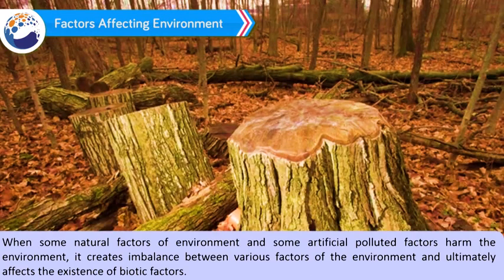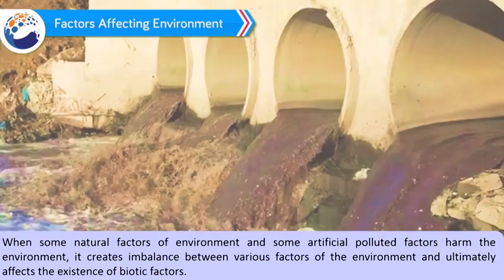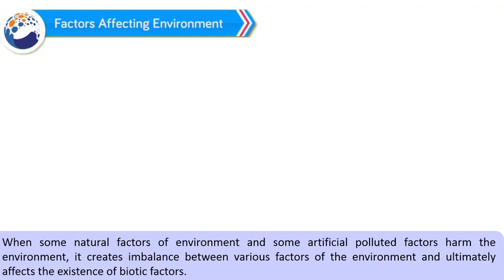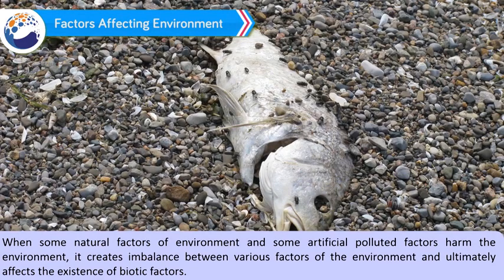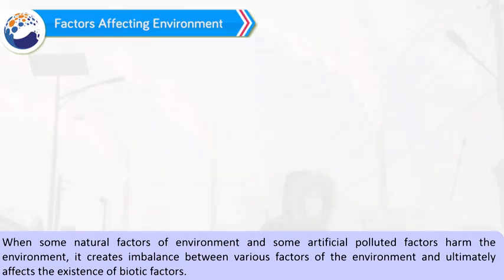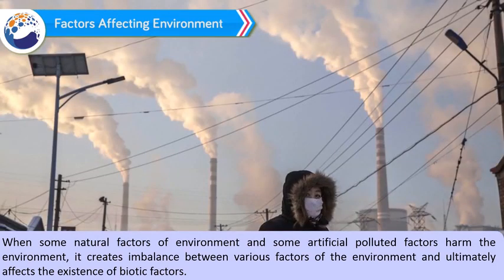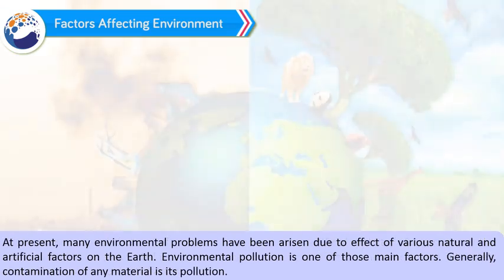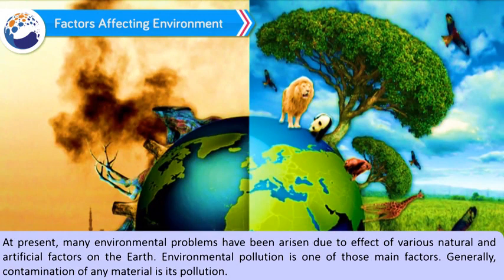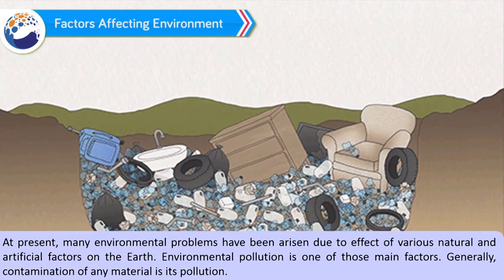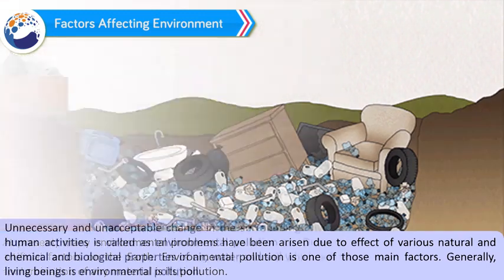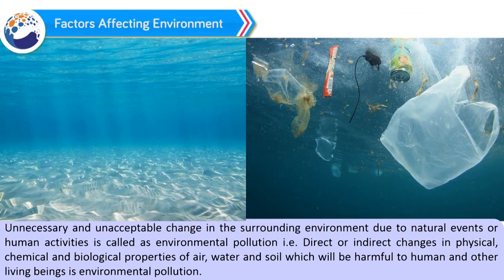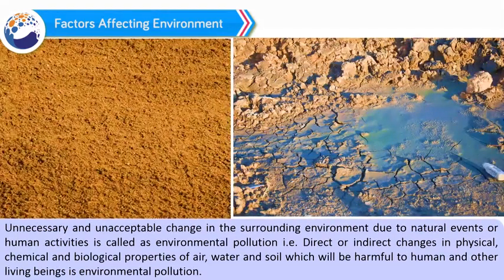Factors affecting environment: When some natural factors of environment and some artificial polluted factors harm the environment, it creates imbalance between various factors of the environment and ultimately affects the existence of biotic factors. At present, many environmental problems have arisen due to the effect of various natural and artificial factors on the earth. Environmental pollution is one of those main factors. Generally, contamination of any material is its pollution. Unnecessary and unacceptable change in the surrounding environment due to natural events or human activities is called environmental pollution.